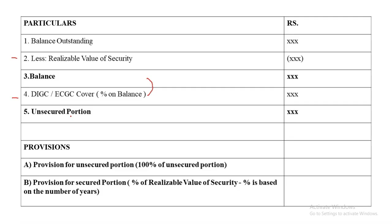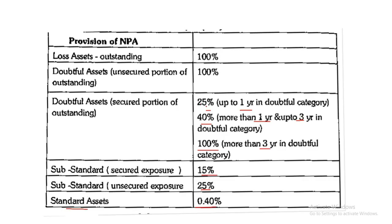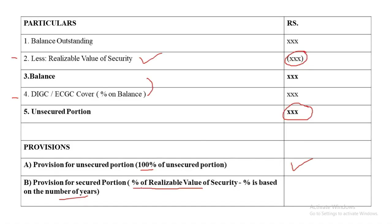On the unsecured portion and the secured balance, we create provisions. Provision one is on the unsecured portion, which is always 100% of the unsecured portion. Provision for the secured portion is a percentage of the realized value — based on the number of years: up to one year 25%, one to three years 40%, three years and above 100%.